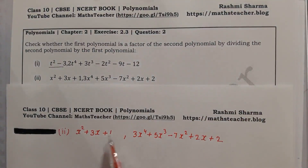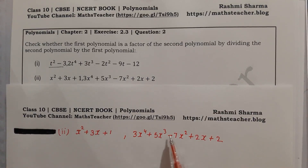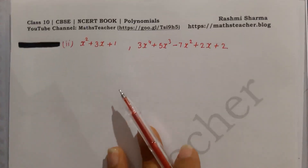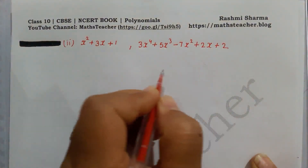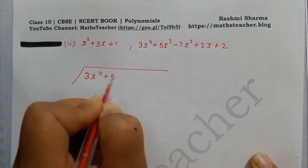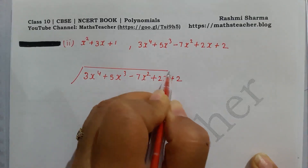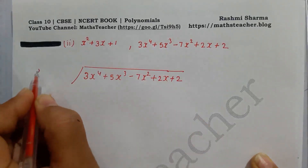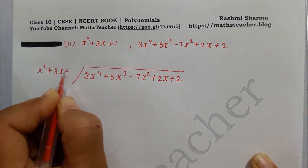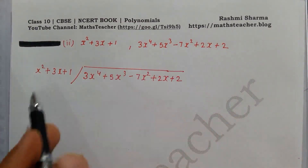We have to divide 3x⁴ plus 5x³ minus 7x² plus 2x plus 2 by x² plus 3x plus 1, and check whether this first polynomial is a factor or not. So first let's see — we have to divide and check. Here we have all the terms arranged according to degree.